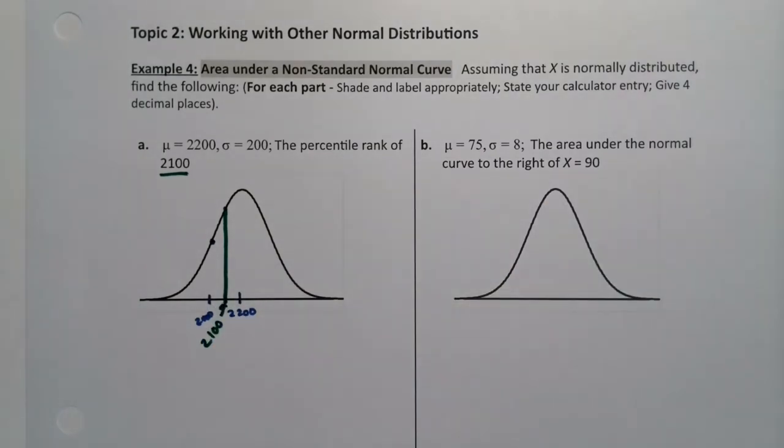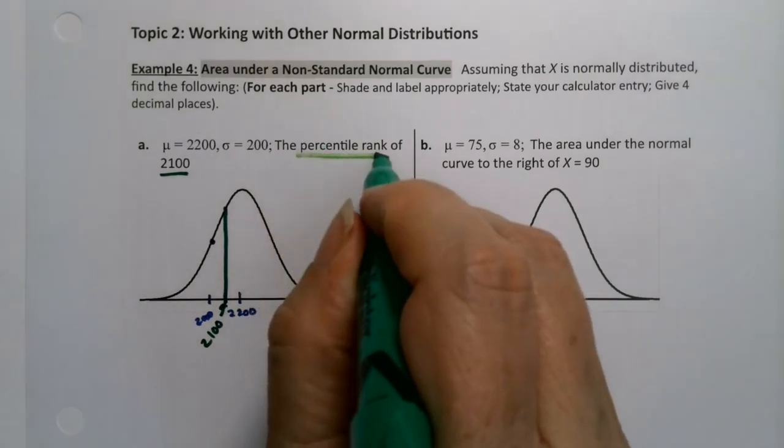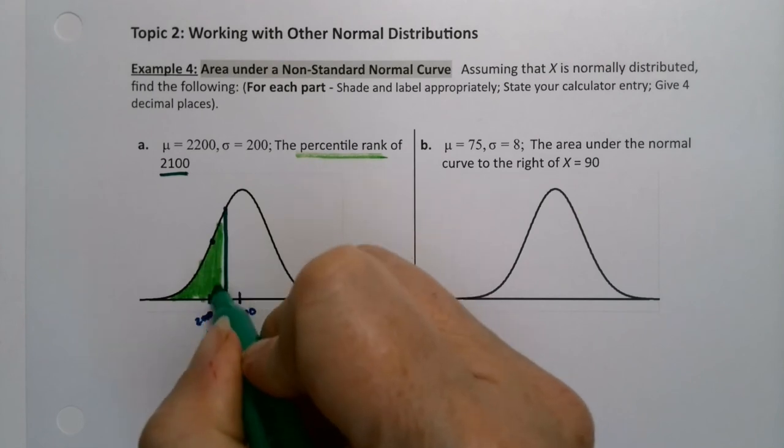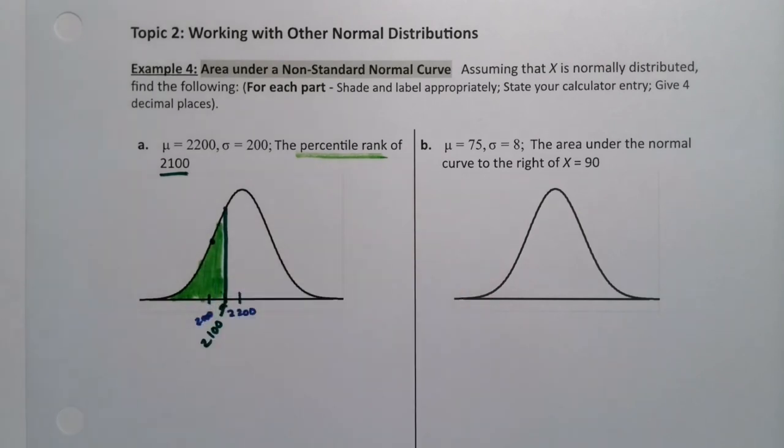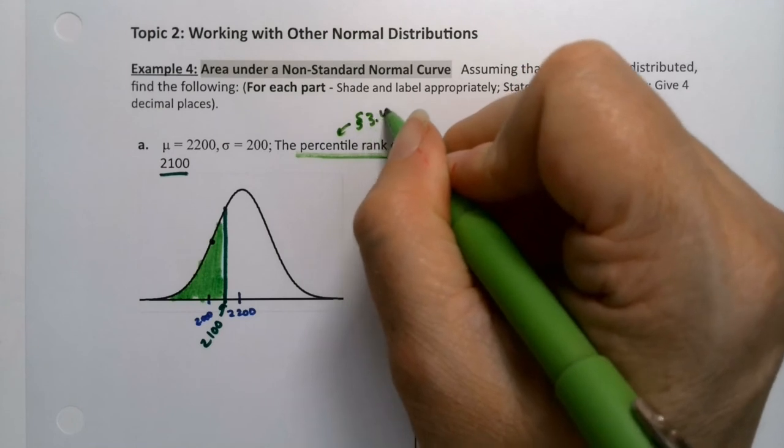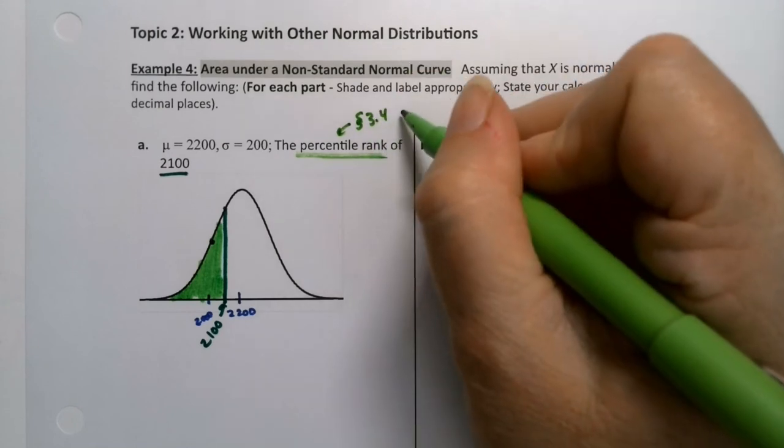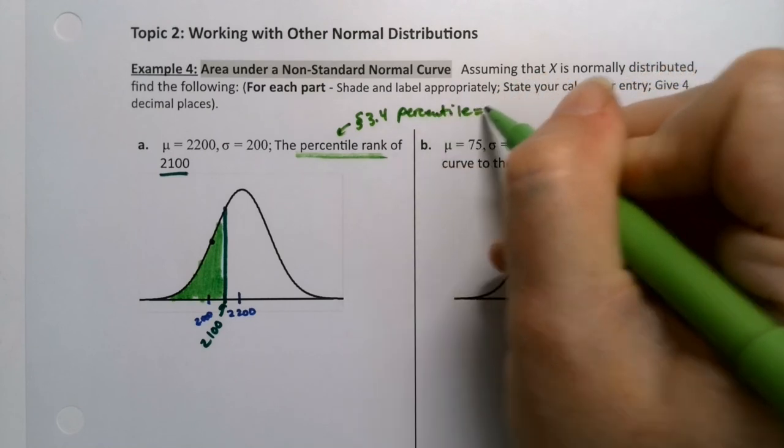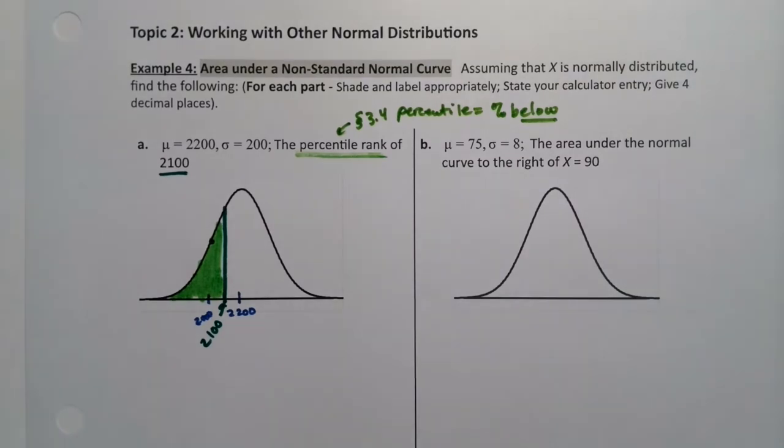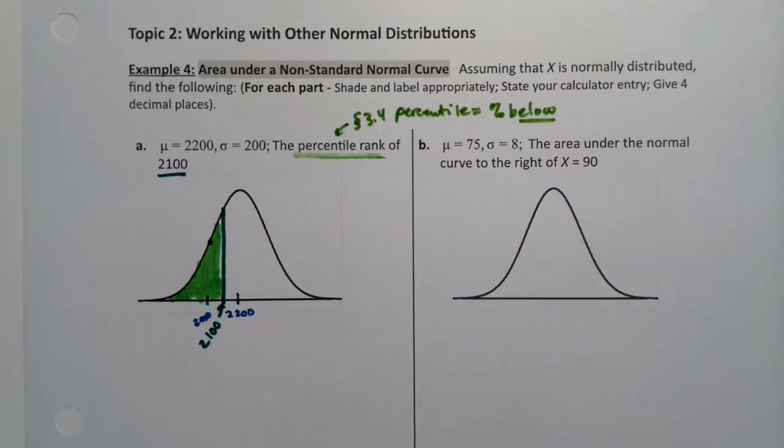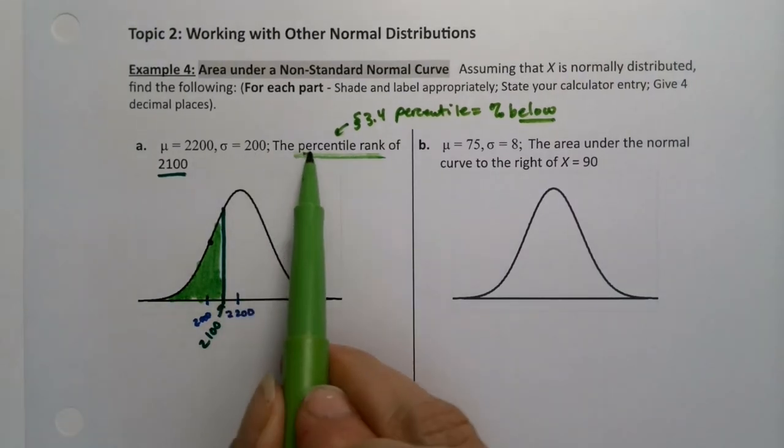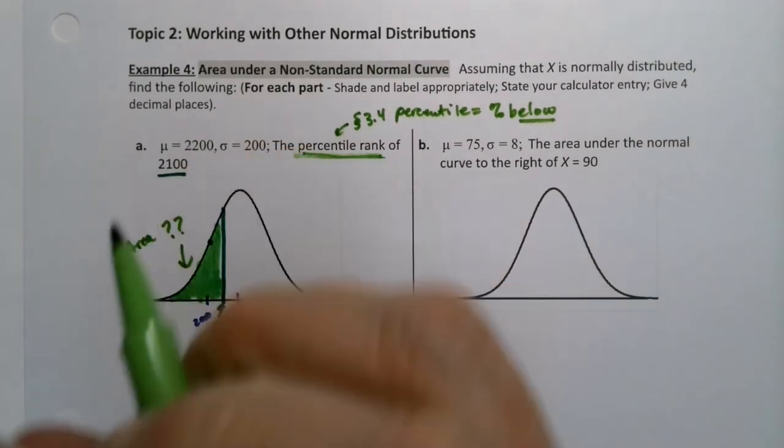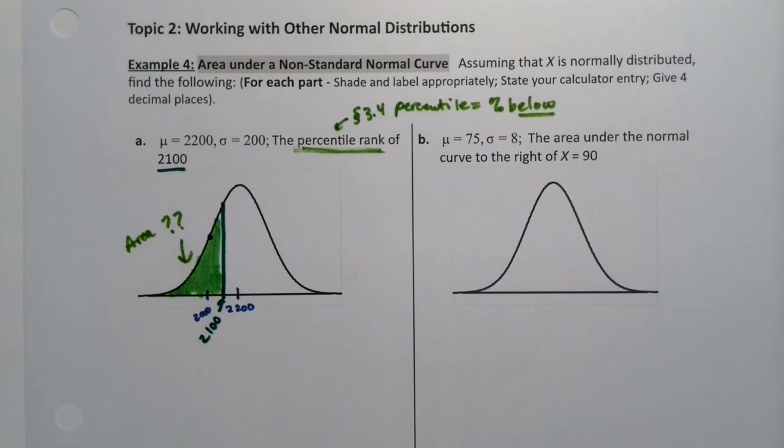The percentile rank is the percentage that is below your value. So you want to shade over here. That was chapter three, section 3.4. Percentile is percent below. Little review right there. Okay. So I want the percentile. I want the percent below. I'm looking for this area right here because that will be the percentage below. So let's go back to the decision matrix.